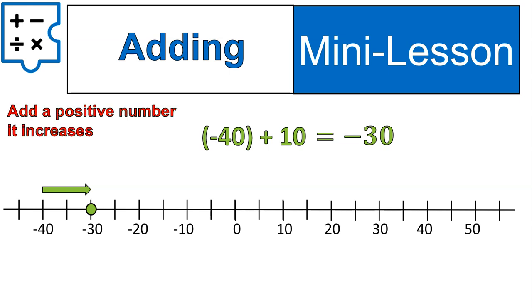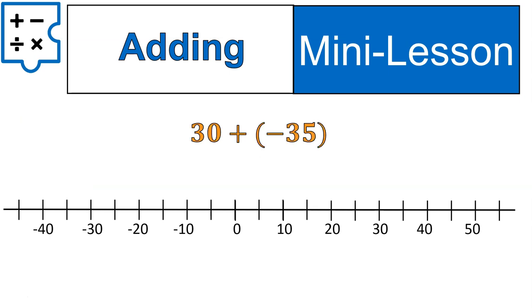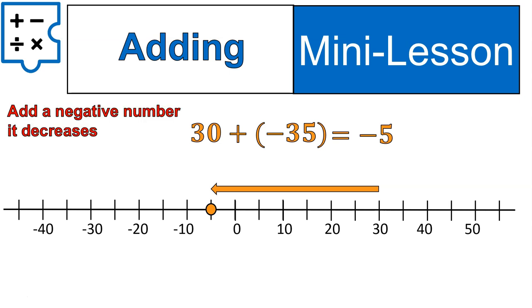When you add a positive number, it increases. Now in this case, we have 30 plus negative 35. The way that would look is we would start at 30, and then we would decrease by 35 or move 35 spaces to the left, bringing us to negative five. Remember, adding is joining those two numbers together. So we joined 30 and negative 35, and we ended up with negative five.